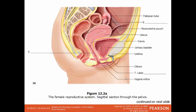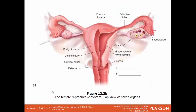In a sagittal view of the female reproductive system, you have the opening to the vagina, the vagina, the cervix, and the uterus right on top of the bladder. The fallopian tubes come out three-dimensionally and the ovaries are on either side. Another view of the pelvic organs shows the end of the vagina, the cervix, the uterus, and the fallopian tubes with ovaries on either side.